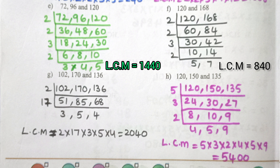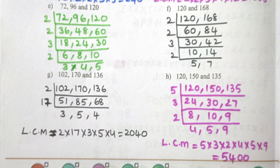F: 120 and 168 — LCM = 840. G: 102, 170, 136 — LCM = 2×17×3×5×4 = 2040. H: 120, 150, 135 — LCM = 5×3×2×4×5×9 = 5400.